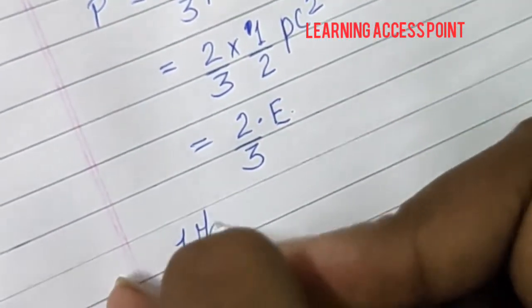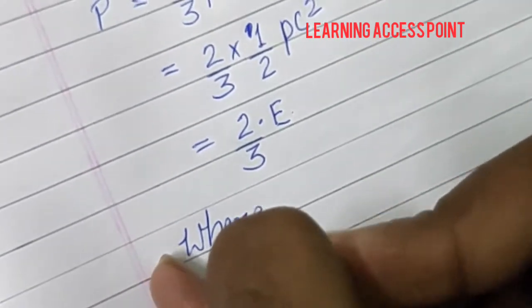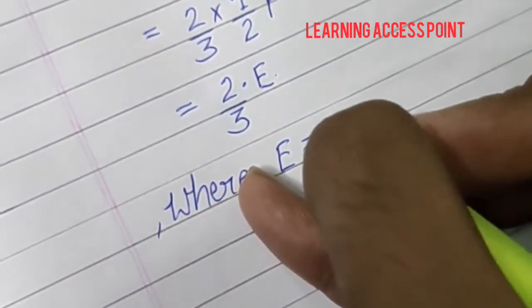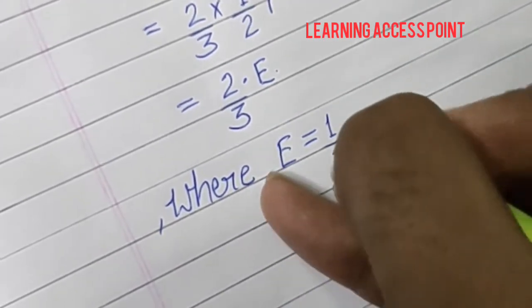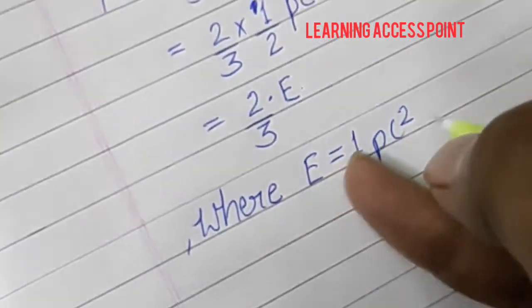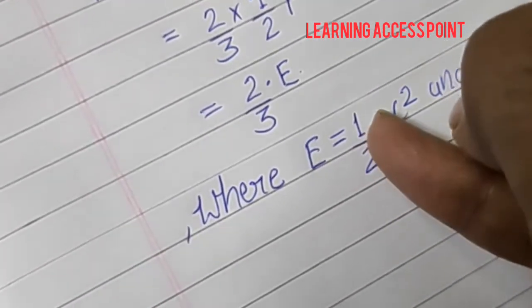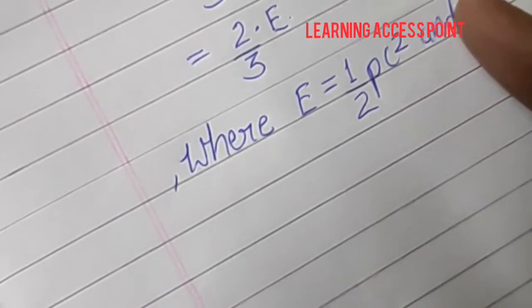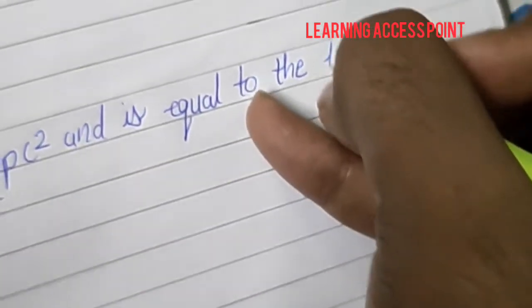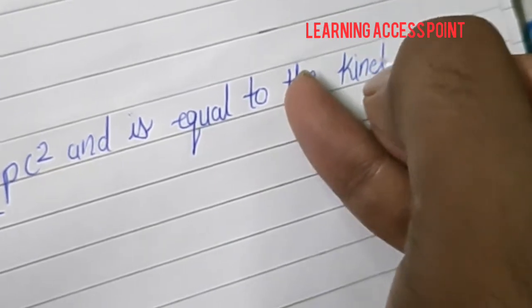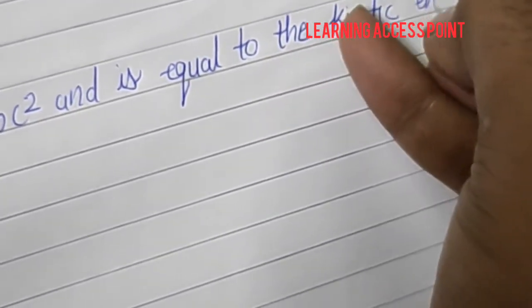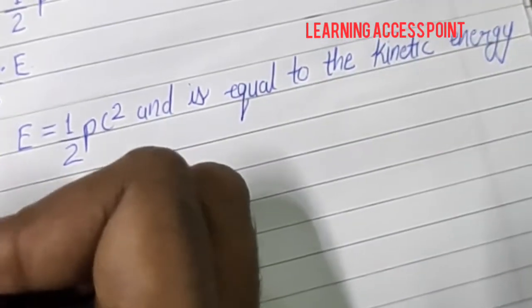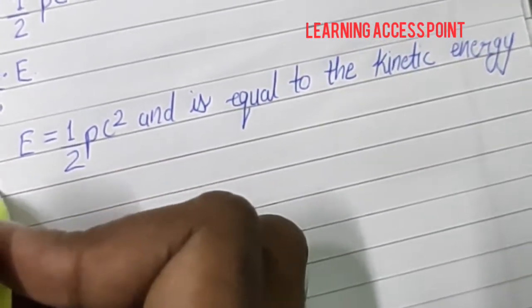Now we have E is equal to 1 by 2 rho c squared, and this E is equal to the kinetic energy per unit volume of gas.